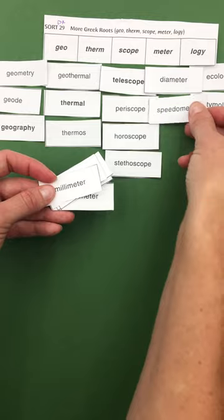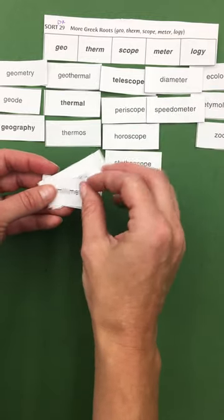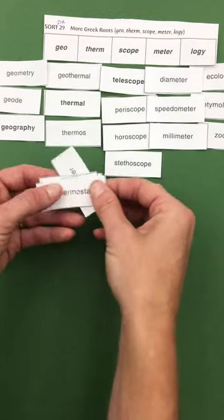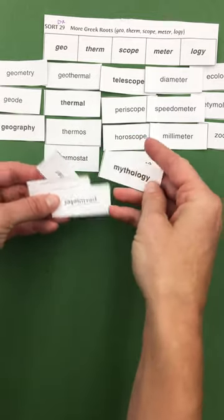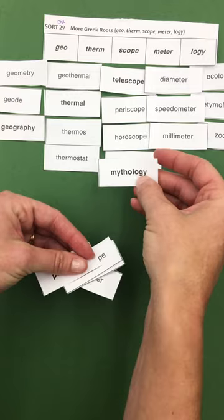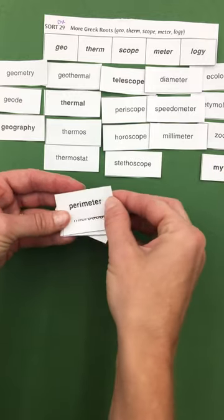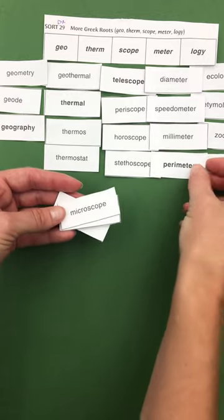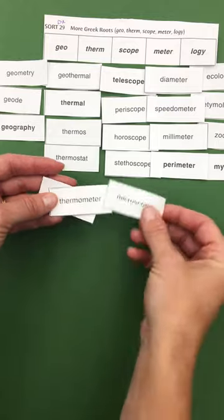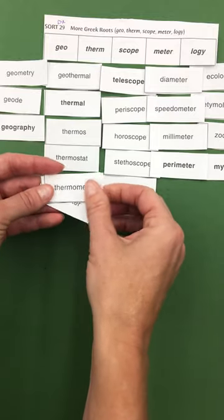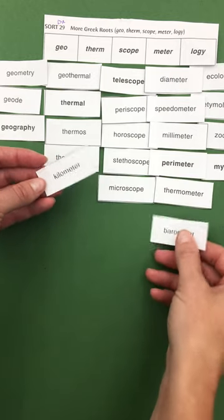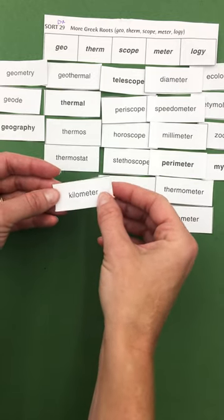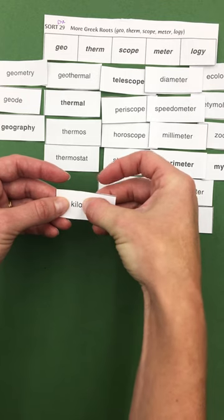Millimeter. Thermostat. Mythology. Perimeter. Microscope. Thermometer. Barometer. And kilometer. Do you remember what kilo means?